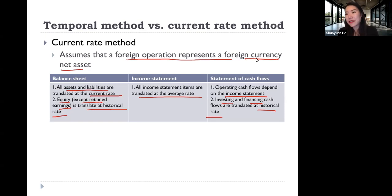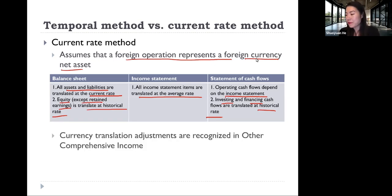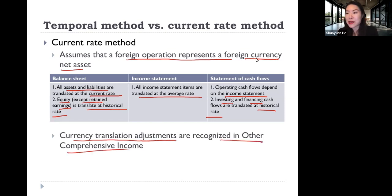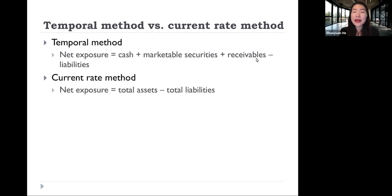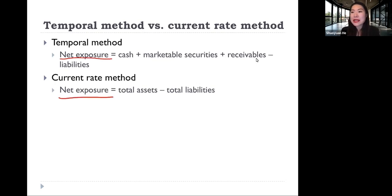As you can see, these two methods of translation differ in many ways, which we are going to look at further. Different methods use different rates for different items. Also, the currency translation adjustment recorded in other comprehensive income is something we are going to look at as well when comparing these two methods.